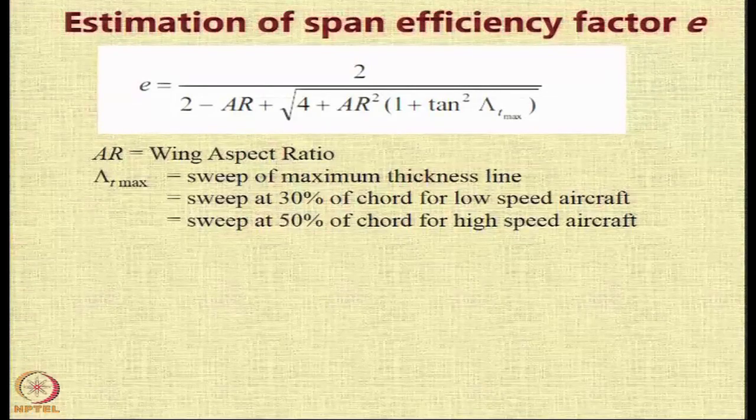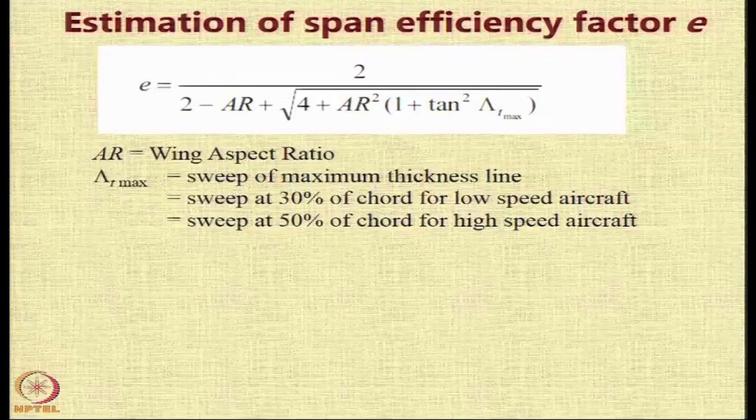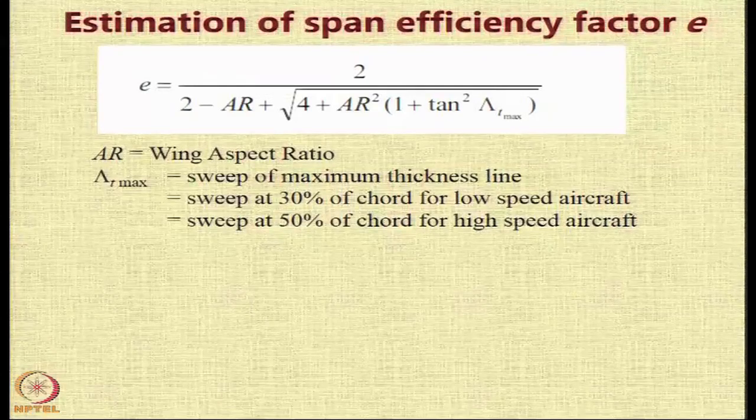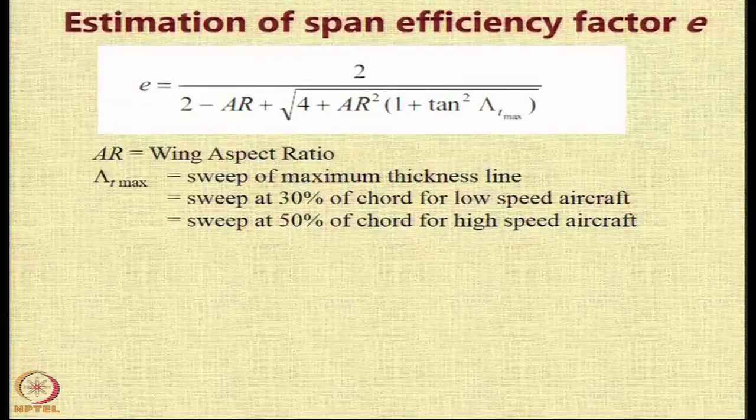the terms that play a role are the wing aspect ratio and the sweep of the maximum thickness line. This is a geometrical value and if you do not know this value, then you can assume it to be the sweep at 30 percent of the chord for low speed aircraft and at nearly half the chord for a high speed aircraft.